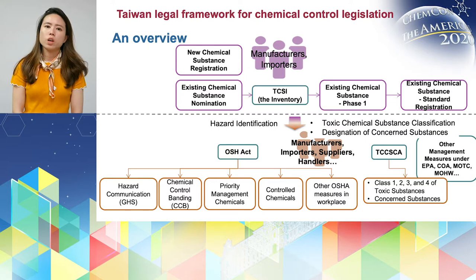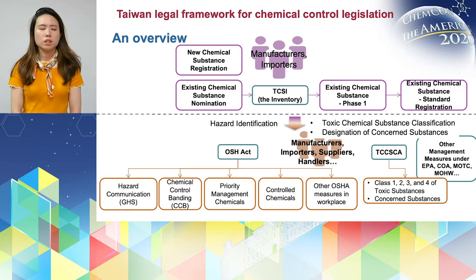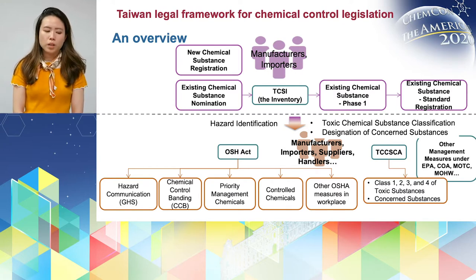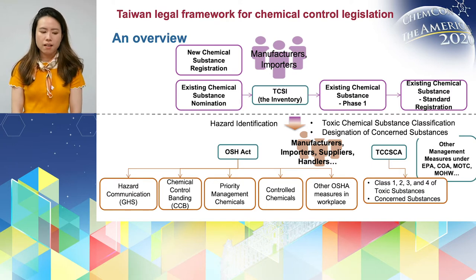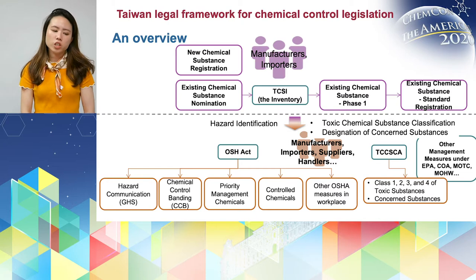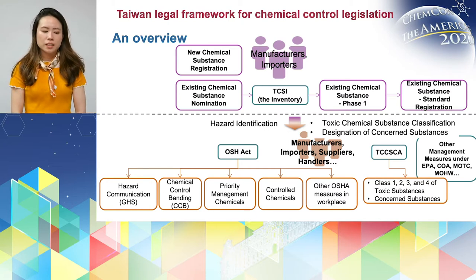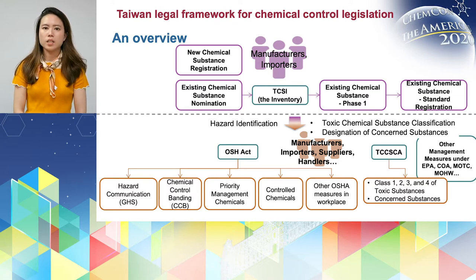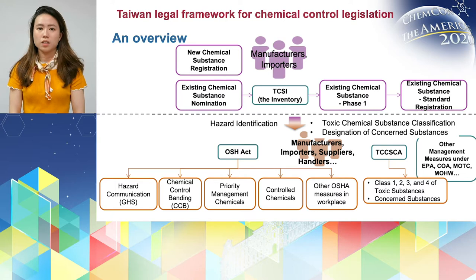The requirement for new chemical substance registration is a little bit complicated, and I'm not going to talk about that in detail today. But for existing chemical substances, we now have our national inventory — we call that TCSI. Several years ago, the Environmental Protection Administration completed the phase one registration for existing chemical substances. Now the EPA has announced a first batch of 106 PACs priority existing chemicals to be subject to standard registration.